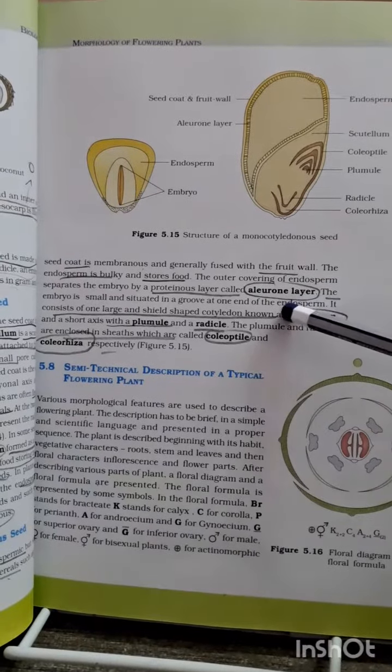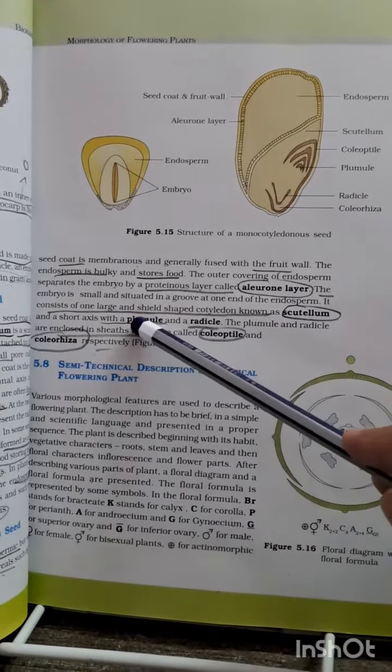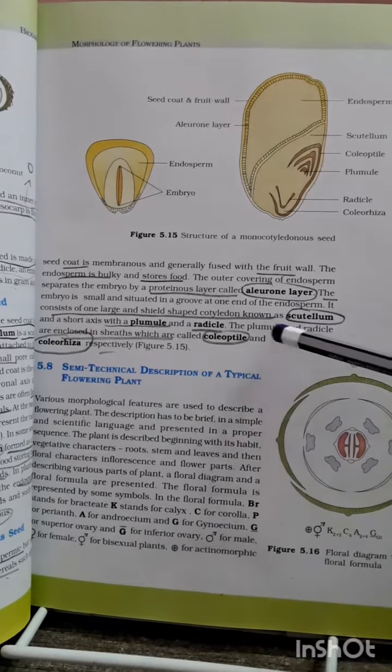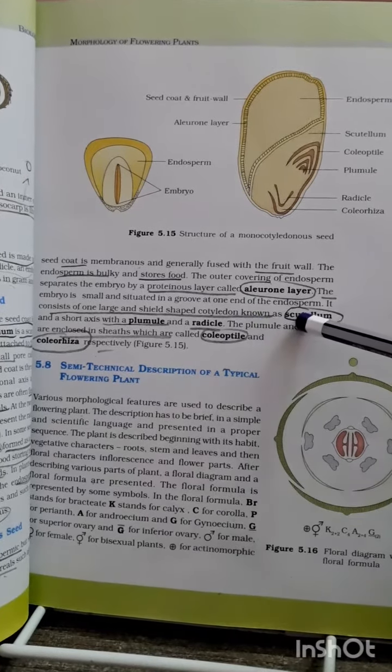The embryo consists of one large, shield-shaped cotyledon called scutellum. The shield-shaped cotyledon is scutellum - this question has been asked multiple times already.